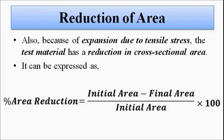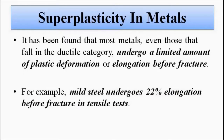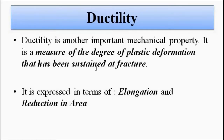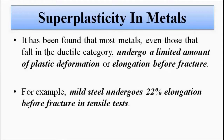If the stress is compressional, it is opposite: length will decrease and cross-sectional area will increase. So under tensile stress, length increases and area decreases; under compressional stress, length decreases and area increases. Now, where does super plasticity come in? It has been found that many metals in the ductile category undergo sufficient plastic deformation or elongation before fracture occurs — that is the ductile behavior of materials.